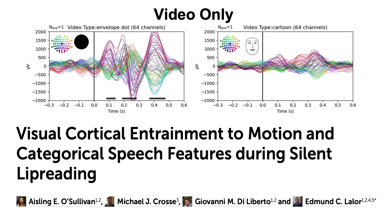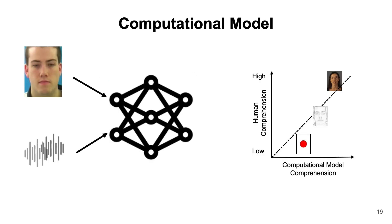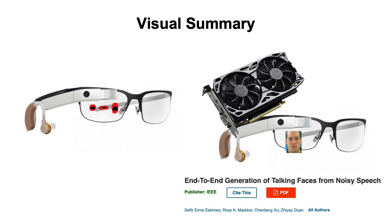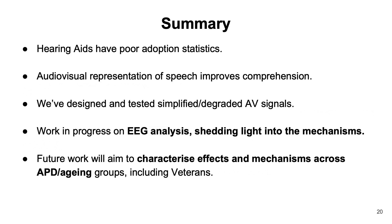To measure bite forces, I built a measurement rig consisting of a capacitive force sensor connected to a lever system. Individual ants were placed in front of the lever tips and quite aggressively bit onto the sensor, resulting in force-time curves, an example of which you can see on the right. The rig was also equipped with a motor-controlled slider allowing me to change the distance between the lever tips, effectively increasing the mandible opening state, so I could measure bite forces as a function of mandibular opening angle.